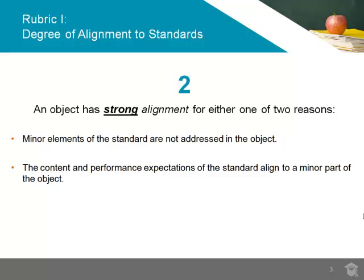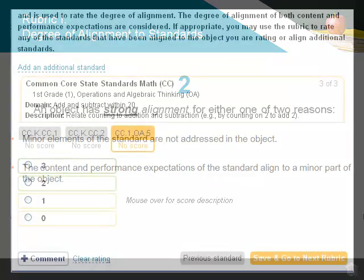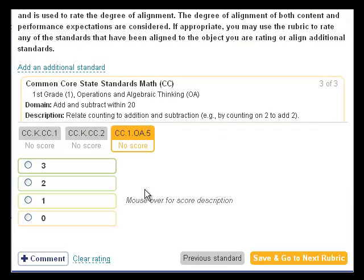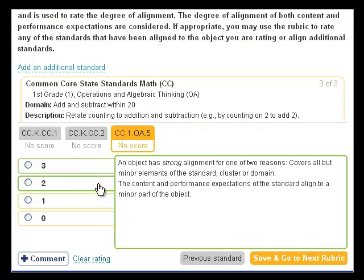An object should be rated strong — a 2 rating — for alignment to standards for one of two reasons: 1. Minor elements of the standard aren't addressed in the object, or 2. The content or performance expectations of the standard align to only a minor part of the object.